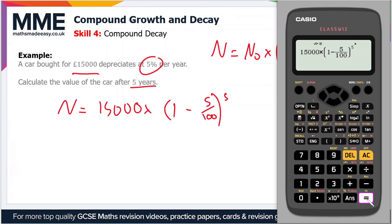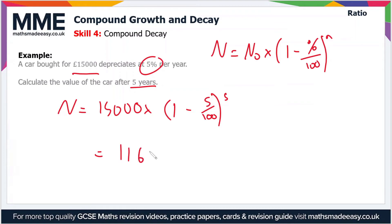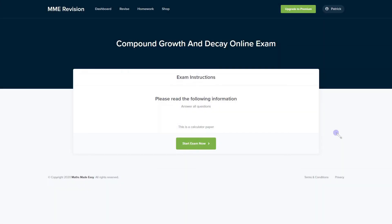That gives us £11,606.71. So £11,606.71, and that's the value after 5 years. Now compound growth and decay is a skill that takes some practice, especially using the formula.